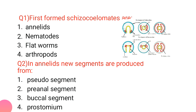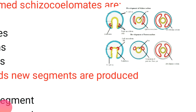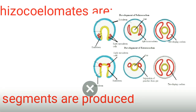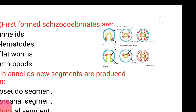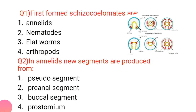The first question: first formed schizocoelmates. Annelids are true coelomates because they have a coelom formed by mesoderm and lined by the mesoderm layer. Splitting of the mesoderm layer occurs, which is why they are called schizocoelmates, unlike pseudocoelomates which don't have a mesoderm lining. Annelids are the first true coelomate animals — this is very important for examinations.